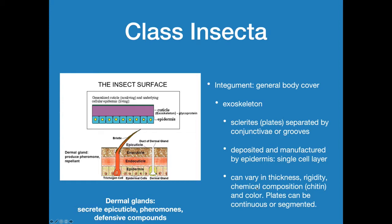The exoskeleton can vary in thickness, how rigid it is, how much chitin is in it, and how much sugar may be present in the plates themselves. All of these different sclerites can be continuous or they can occur in segments. Here we have a simple drawing of the insect surface. If we go down a bit lower, here's the epidermis. There is a duct moving through here, and some insects will also have a cuticle-like structure that is part of the layer between the actual cuticle and the epidermis.